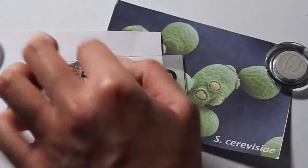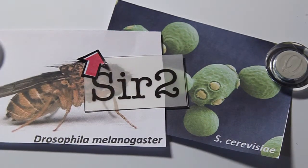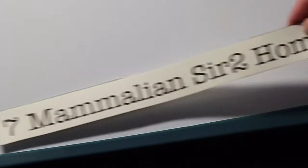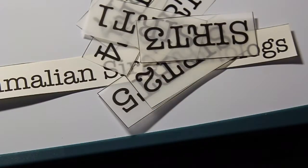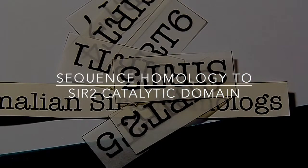However, mammals don't possess SIR2. Instead, there are 7 mammalian homologues of SIR2, termed SIRT1-7, that share sequence homology to the catalytic domain of SIR2.